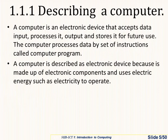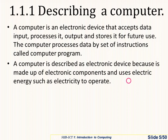For us to describe the computer, we need to know what a computer is. A computer is an electronic device that accepts data input, processes it, outputs and stores it for future use. When giving a definition of a computer, make sure you have certain words you should not miss. For example, 'electronic device' — we call a computer an electronic device simply because it is made up of electronic components, for example ICs, transistors, etc.